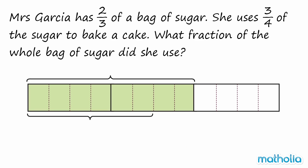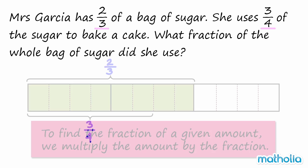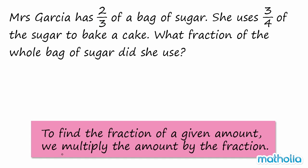Let's use a model to help find the answer. We know in the beginning, Mrs. Garcia has two-thirds of a bag of sugar, and she uses three-quarters of the sugar to bake a cake. We need to find three-quarters of two-thirds. To find the fraction of a given amount, we multiply the amount by the fraction.